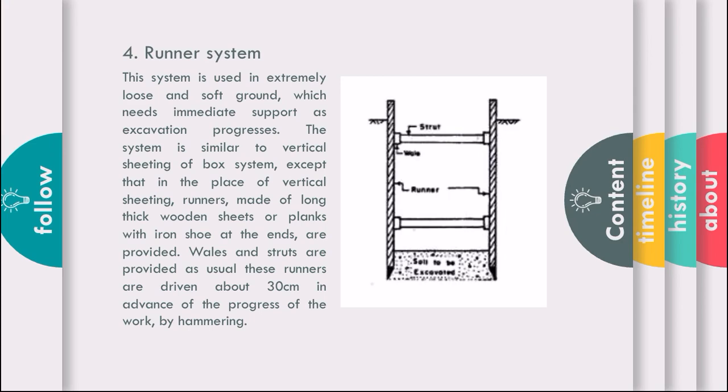The top of the sheet is supported on firm soil at the bottom of the excavation trench. The system is similar to vertical sheeting of box sheet system, except that in the place of vertical sheeting, runners made of long thick wooden sheets or planks with iron shoes at the end are provided. The wales and struts are provided as usual.